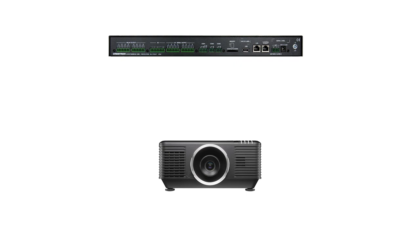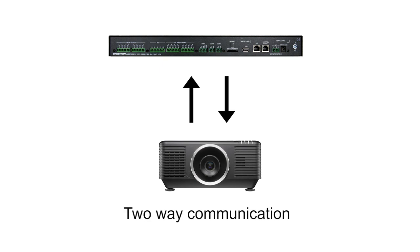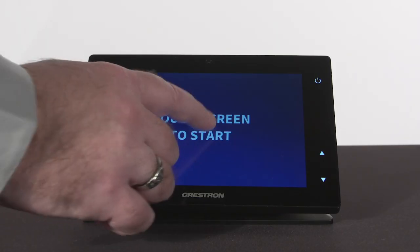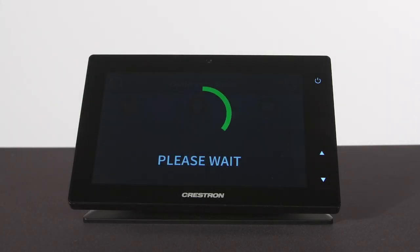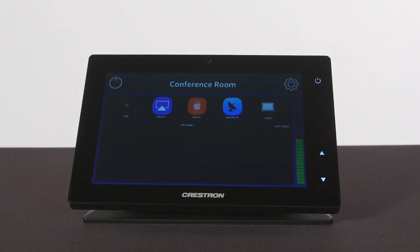Because the COM port supports two-way communication, they are really useful for any device you wish to control directly and receive information from, such as a projector. Once a projector receives a command to turn on, it may be some time before it's ready to receive an input signal due to the warm-up of the lamp. Using a serial port for control allows us to present a message to the end user when the projector is warmed up and ready to display a source.